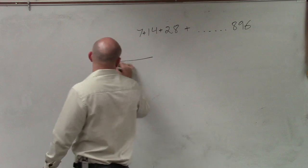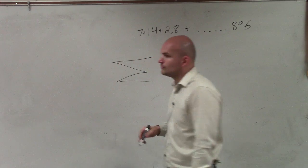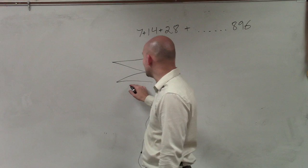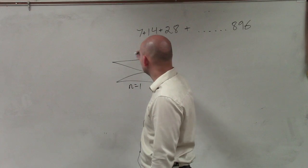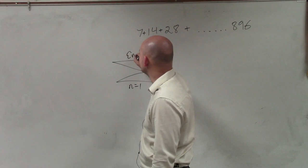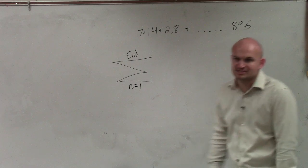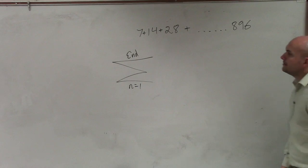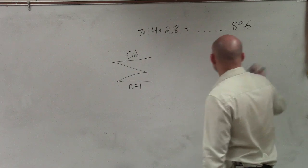So let's go ahead and write our sigma notation. We're going to say we're going to start at n equals 1, and we'll go to the end, which we don't know right now. We'll figure that out in a second. However, let's remember the rule for sigma notation.